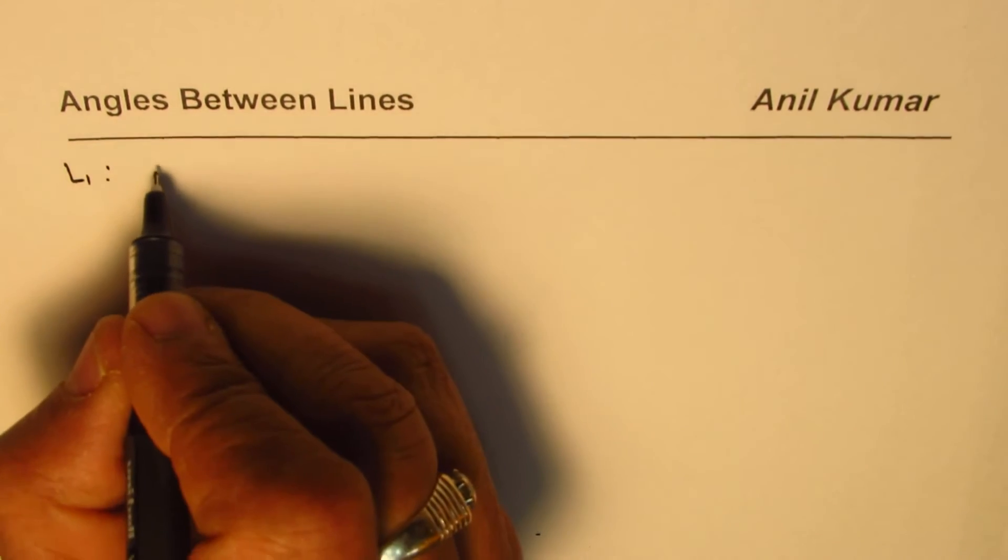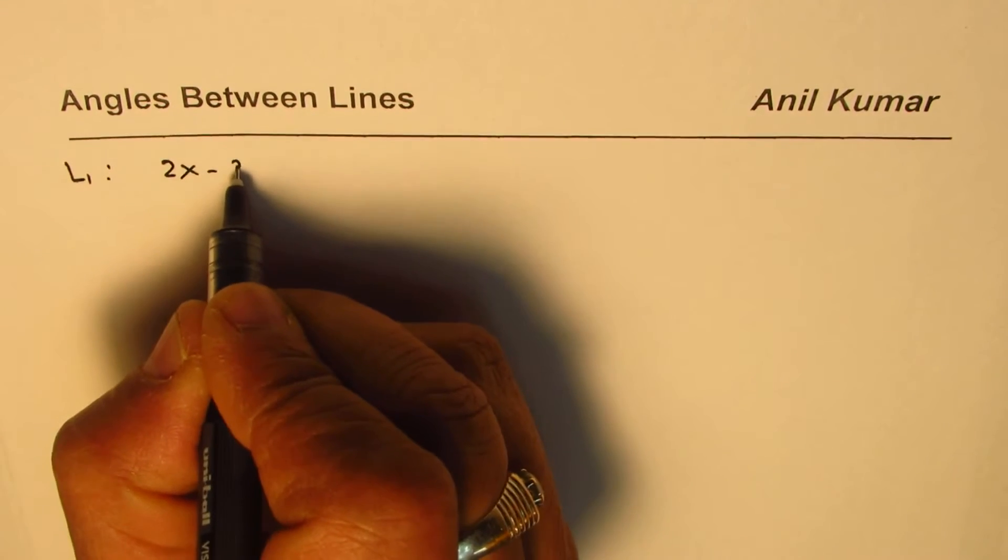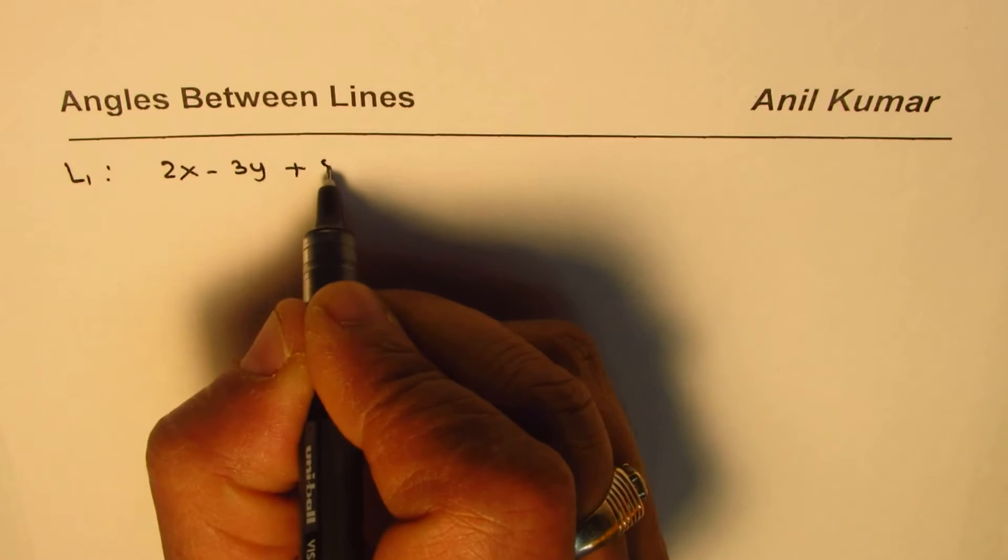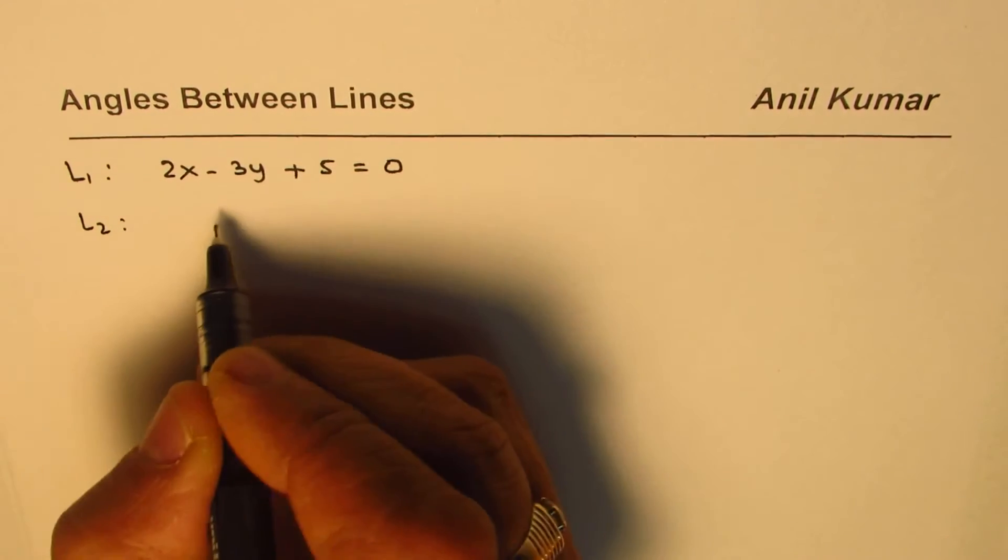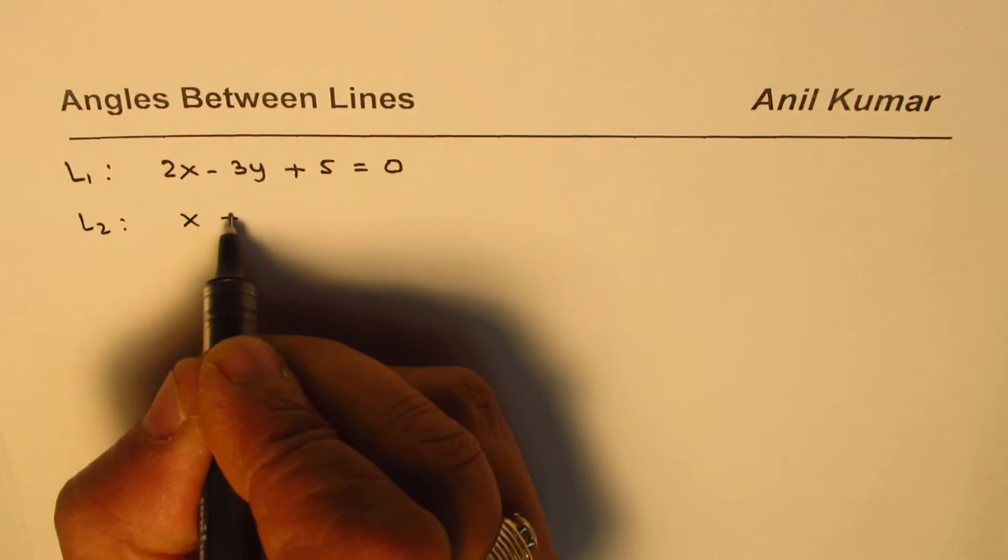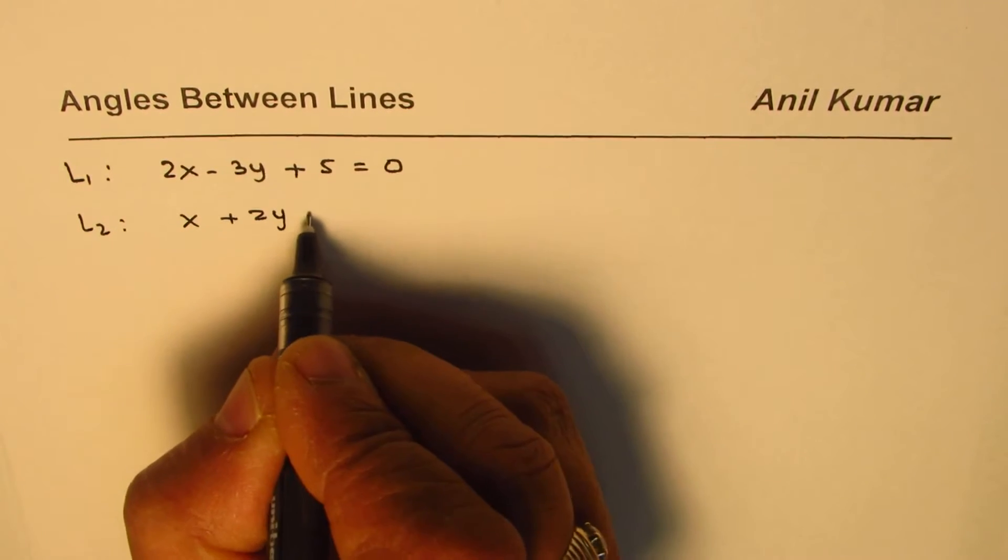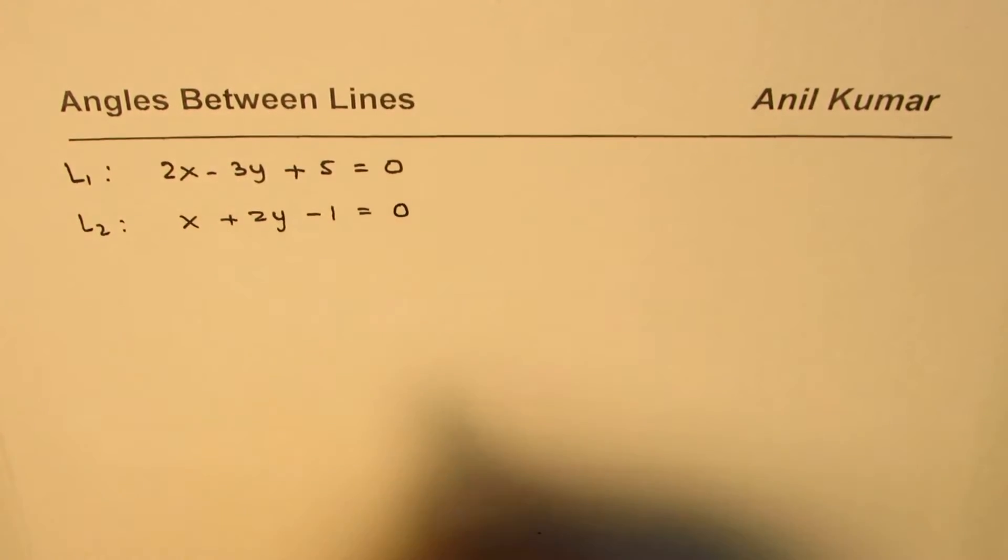Let's say the equation is 2x minus 3y plus 5 equals 0. And let's say we have another line whose equation is x plus 2y minus 1 equals 0. So at random I have just picked up two equations and now we will find the angle between these two lines.